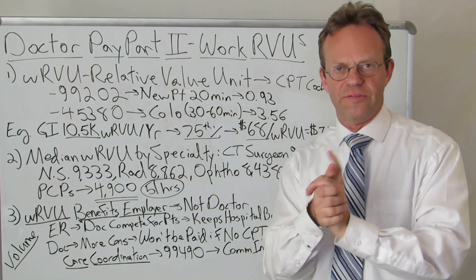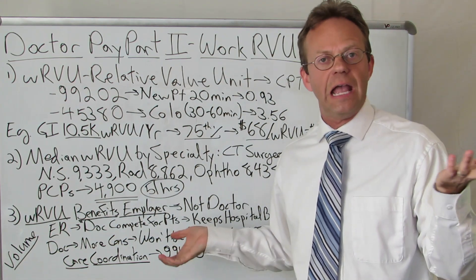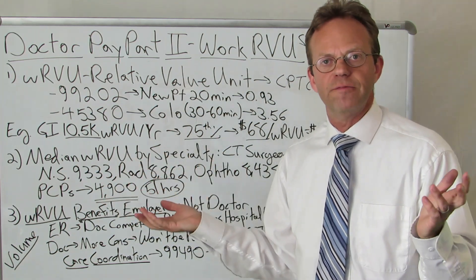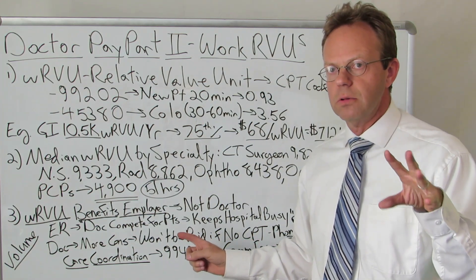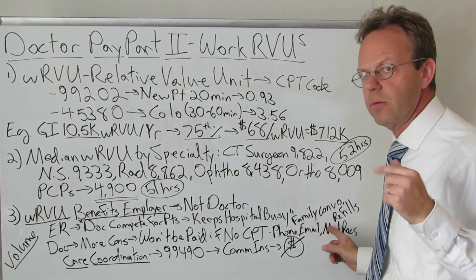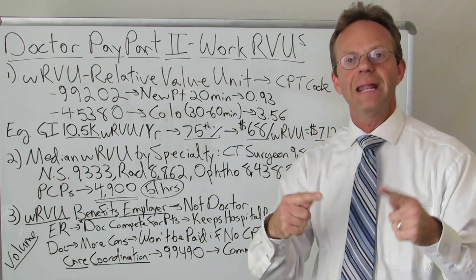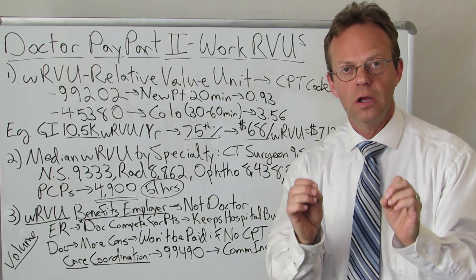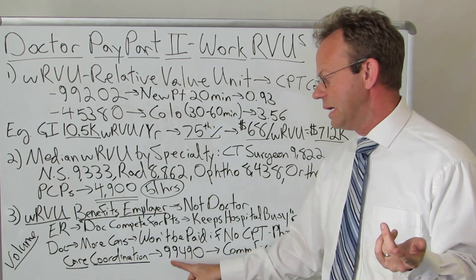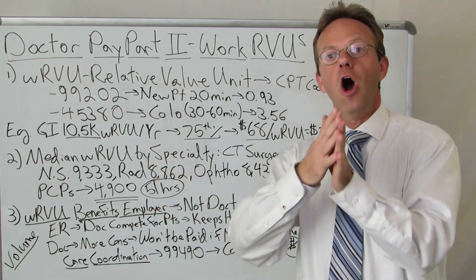The con for doctors under the RVU system is that you will not be paid for all the work you do — and that holds true for both primary care physicians and specialists. However, all the care coordination that primary care physicians do takes enormous time: phone calls, emails, medical records, family conversations, refills. In fact, there is so much care coordination by primary care physicians that Medicare actually added CPT code 99490 starting in 2015, which primary care doctors can bill once a month for 20 minutes of care coordination activity over the course of that month.